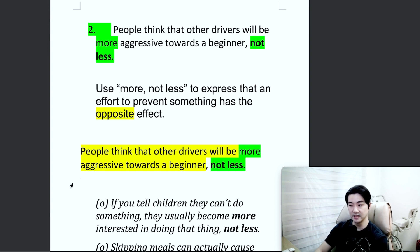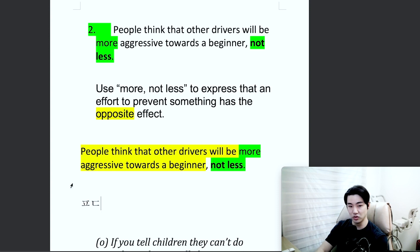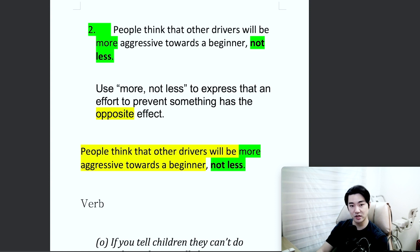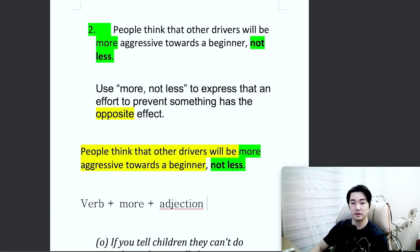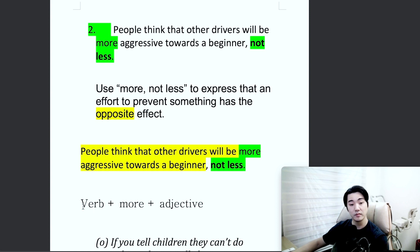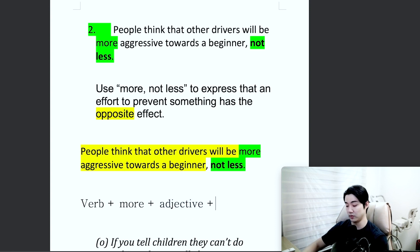When we use this expression, usually we use a verb — it can be a be verb, or it can be an action verb — then 'more' and then an adjective. So in this example: 'will be more aggressive.' Be more kind, not less. And then we add 'not less.'